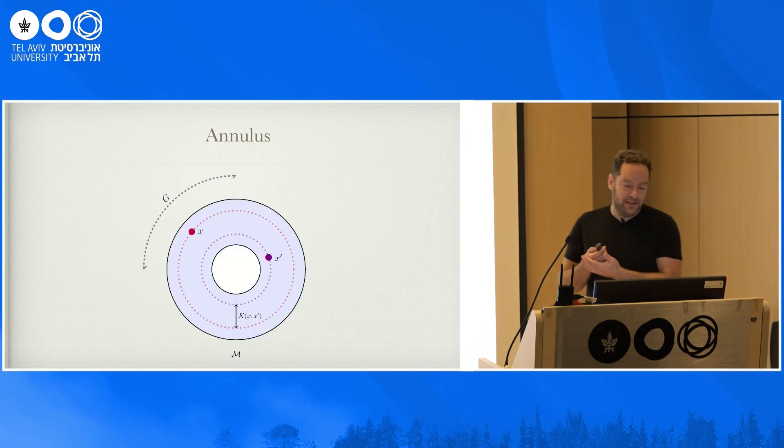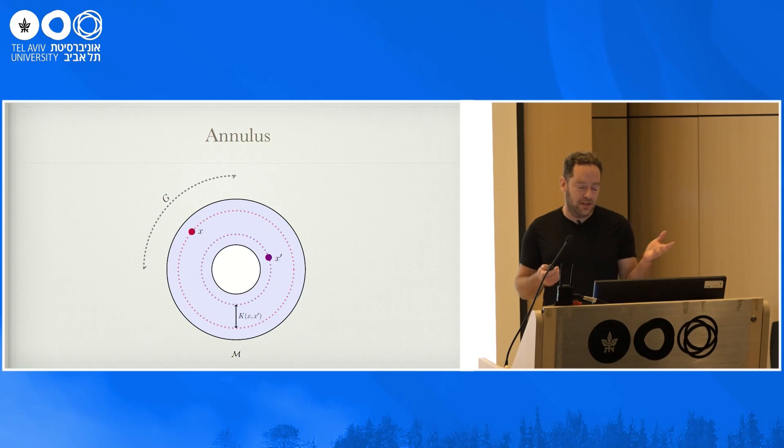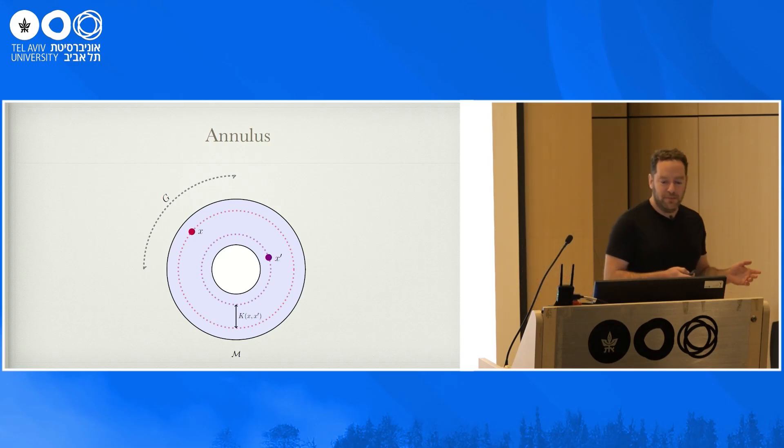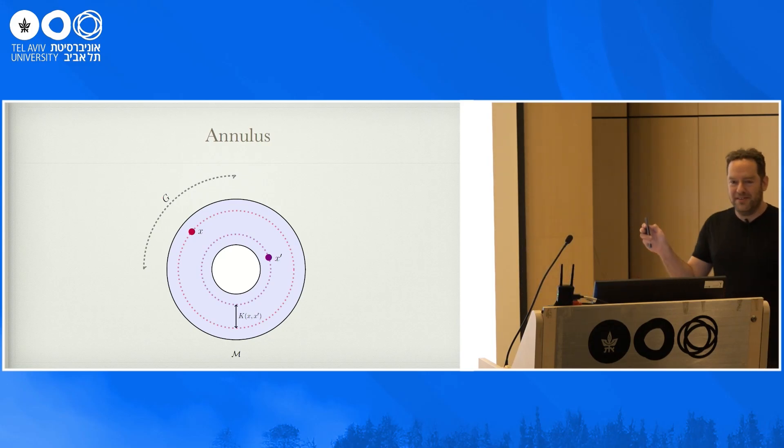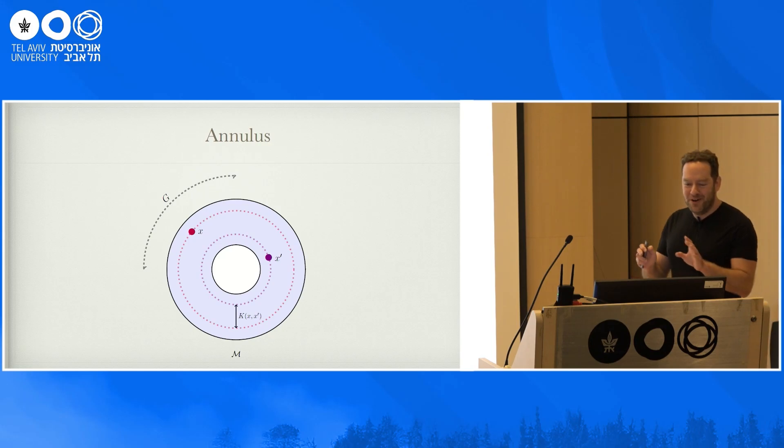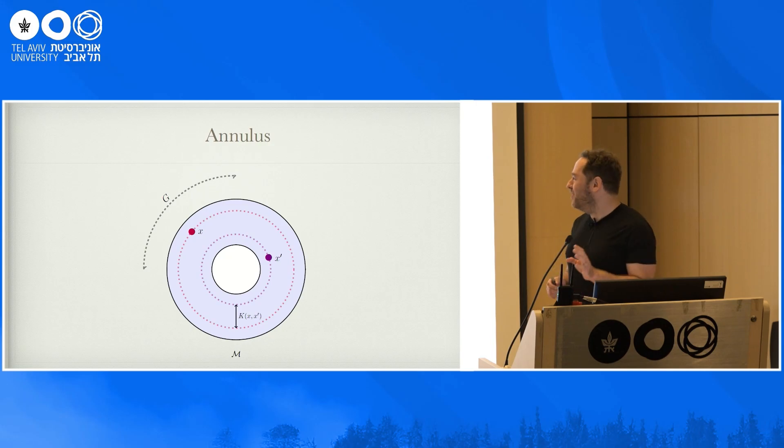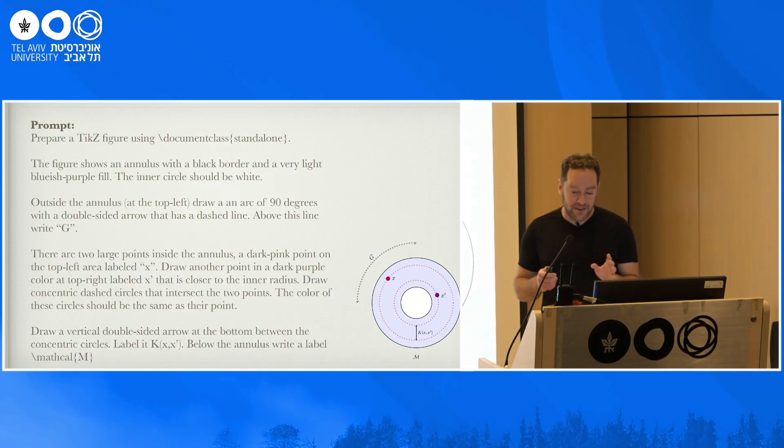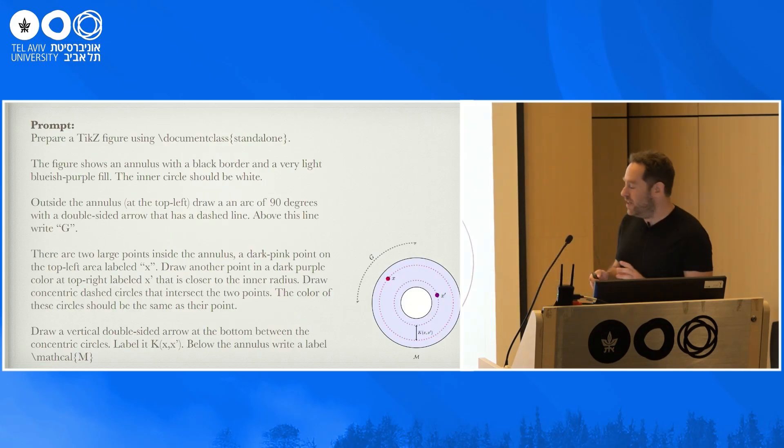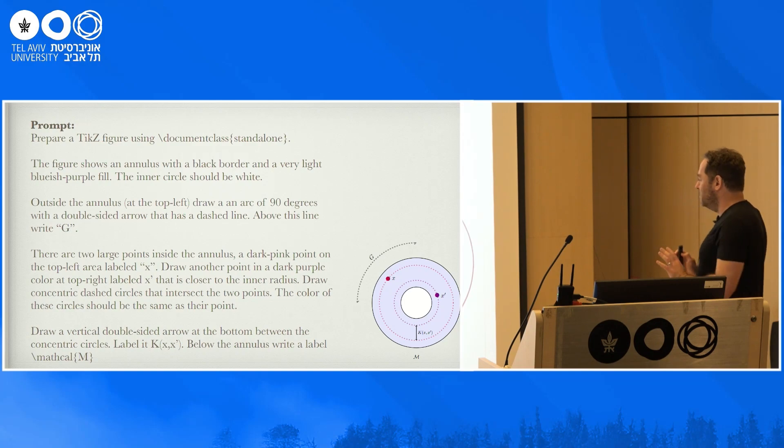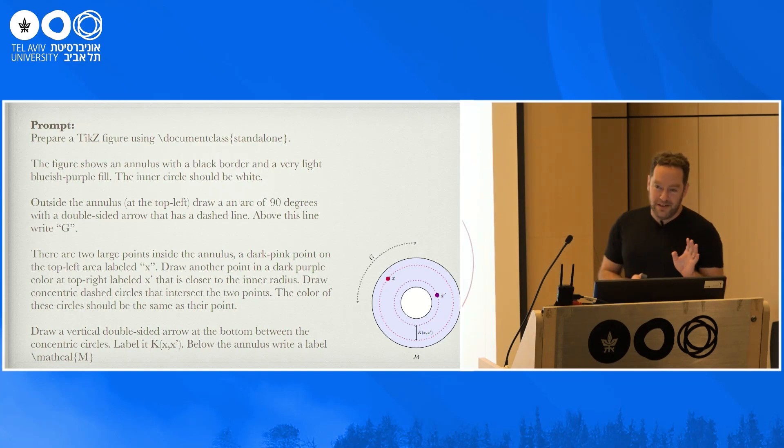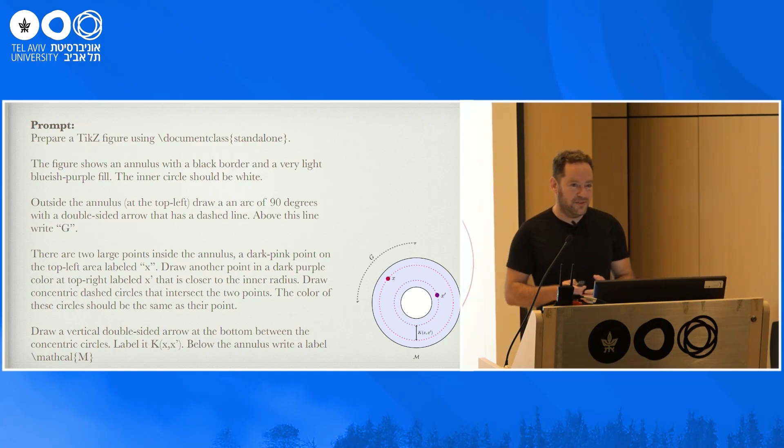The third example is I took an illustration that I actually made in TikZ in one of my papers. So I know for a fact that this has never been on the internet, so no model has seen this particular plot. And it's quite an intricate plot with a lot of elements. And this means that the prompt I had to write was quite lengthy. But I gave detailed instructions about how this thing should look like.